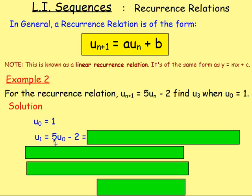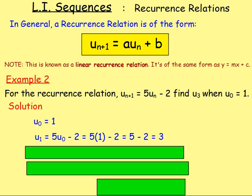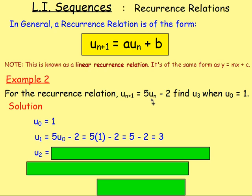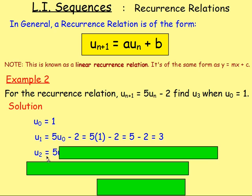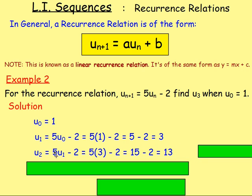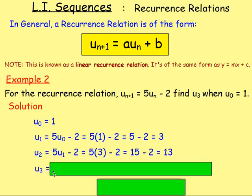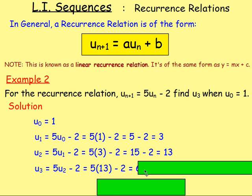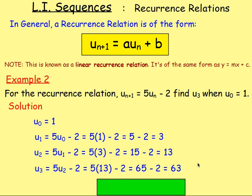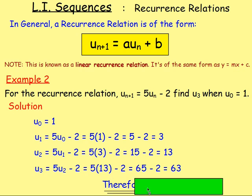Because you know U0, because we know that's 1, we can replace it. So it's 5 times 1, take away 2, which gives us 3. After that, we want the next term. So it's 5 times U2, take away 2, which will then give you 63 in the end. We're asked for U3, it's find U3. So we can then say, therefore, U3 would equal 63. And that's your answer.